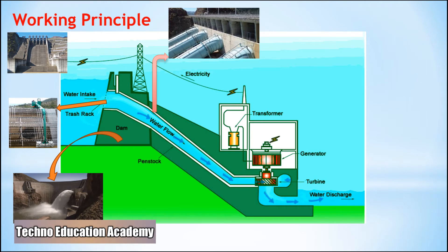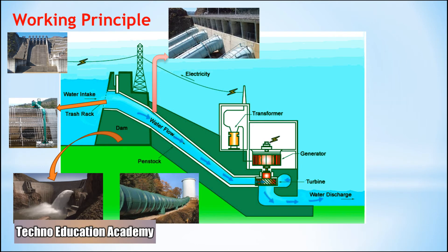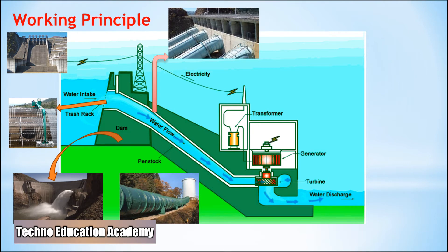The next component is the surge tank. Surge tanks are tanks connected to the water conductor system. They serve the purpose of reducing water hammering in the pipe, which can cause damage. Sudden surges of water in a penstock are absorbed by the surge tank. When water demand increases, the surge tank can supply the collected water, helping to regulate and control the water flow and pressure inside the penstock.